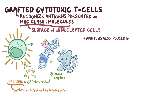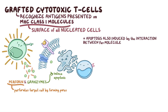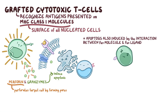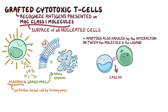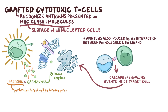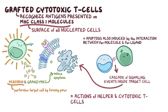Apoptosis is also induced by the interaction between a FAS molecule, expressed on the surface of the target cell, and a protein called FAS ligand, expressed on the surface of the cytotoxic T cell. This interaction triggers a cascade of signaling events inside the target cell, eventually causing apoptosis. Overall, the combined actions of helper and cytotoxic T cells results in extensive injury of one or more tissues throughout the body.